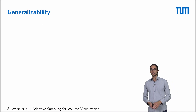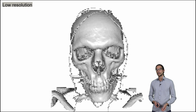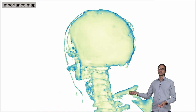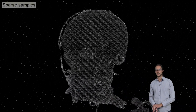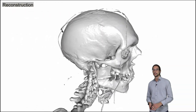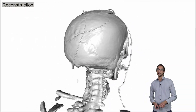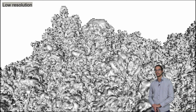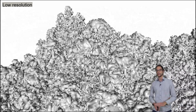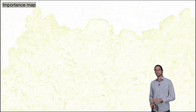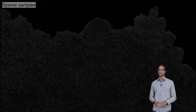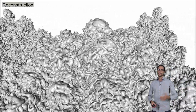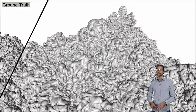The networks were trained only on the ejector dataset, but they generalize well without any retraining on completely novel datasets — for example, a CT scan of the human skull. Here you see the reconstruction and comparison against the ground truth. Here is a second example with the Richtmeyer-Meshkov dataset. For further examples and quantitative results, please have a look at our paper. You can see again the reconstruction and a comparison against the ground truth.